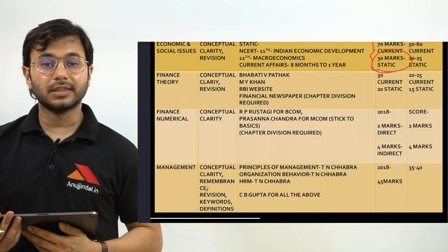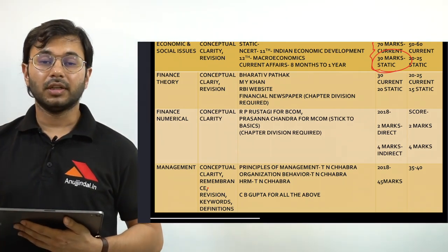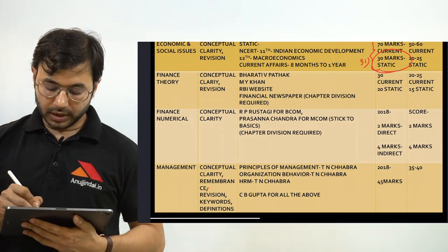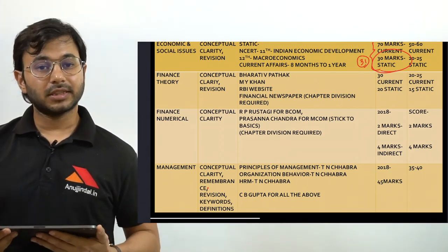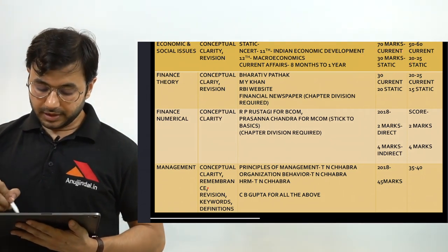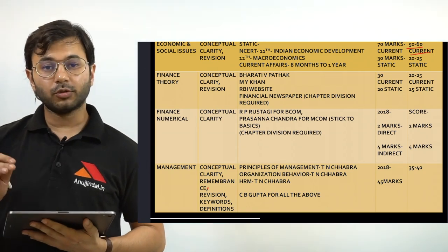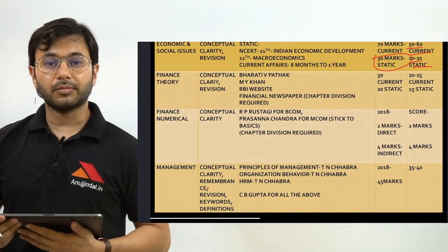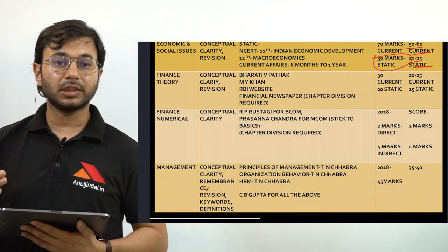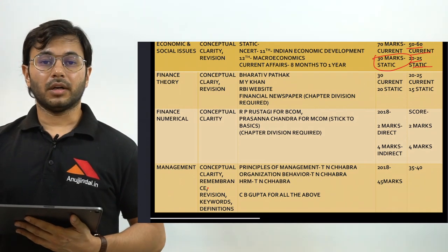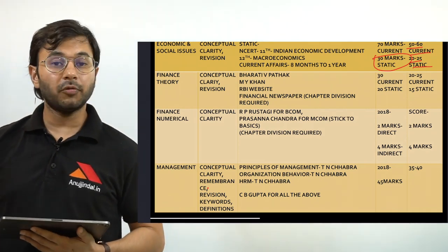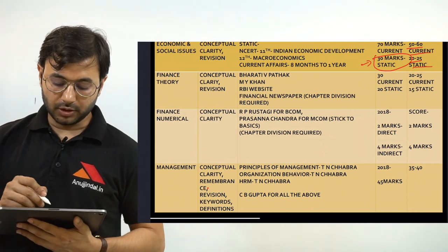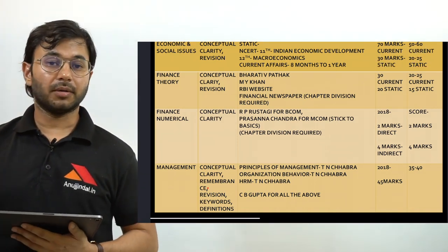In my analysis of the 2018 RBI examination — available on my channel — I proved that 31 marks worth of questions came directly from the static portion of ESI. Out of this 30 and 70 split, if you're prepared well you can score 50 to 60 in current affairs and 20 to 25 in the static portion. Do not ignore the static 30 marks and give them less preference as compared to current affairs.